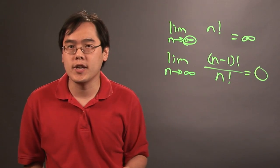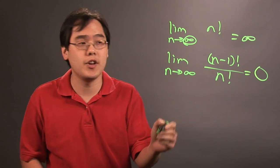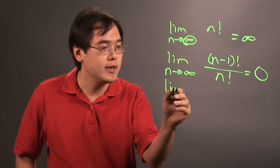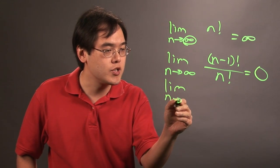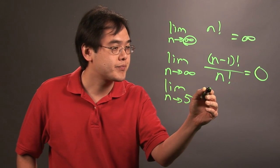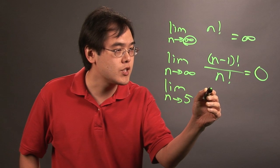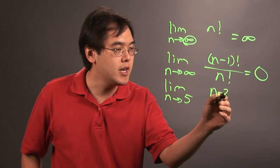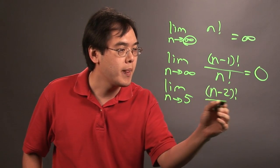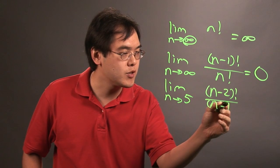But if you notice, I've used infinity both times, but it doesn't have to be infinity all the time. So if you have limit as n approaches, let's just say five of n minus 2 factorial over n minus 1 factorial.